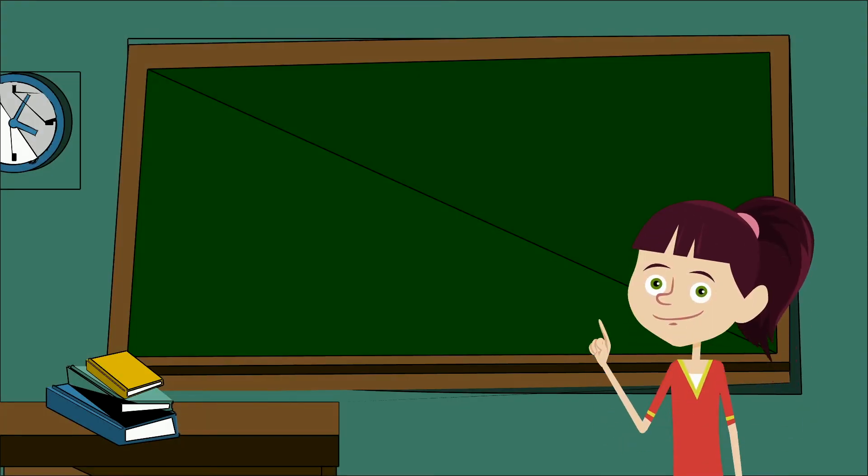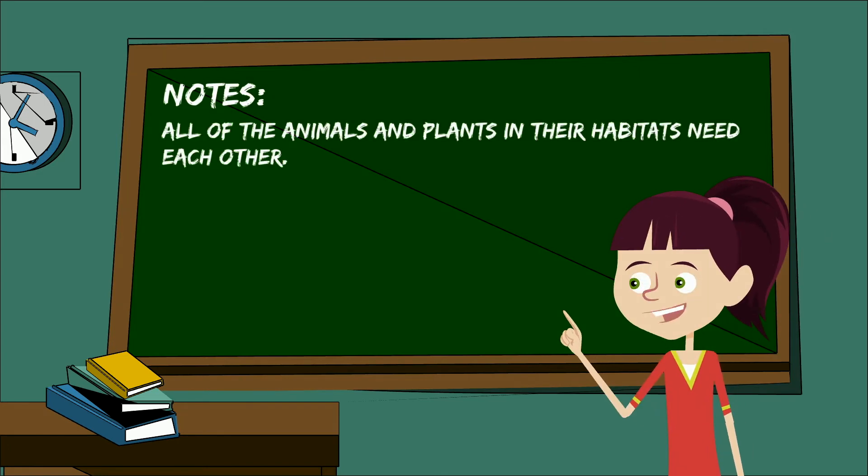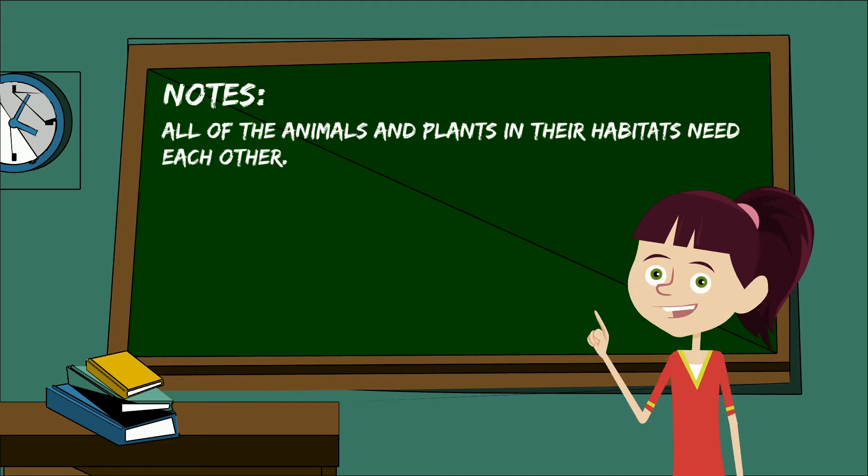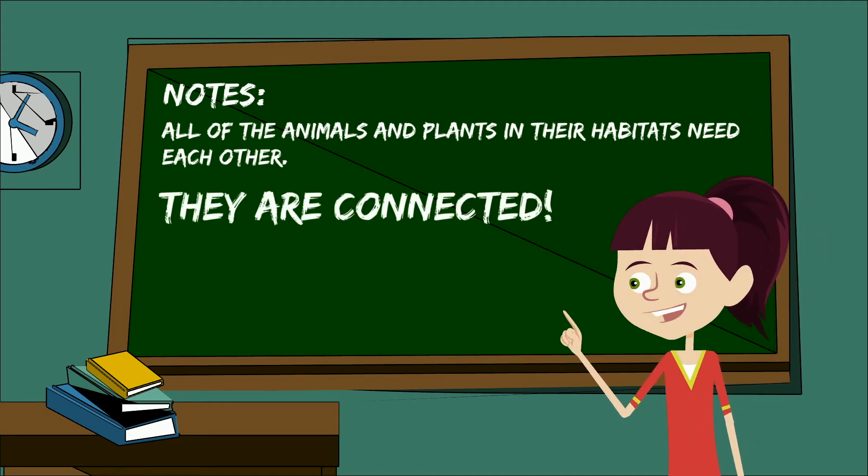So, we observed and described the animals and their habitats. Why is diversity important? Why do we need to know about this? Well, just as we humans depend on animals for food and trees for building things, all the animals and plants in their habitats need each other. They're connected.